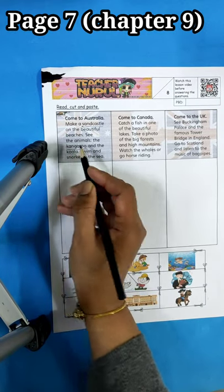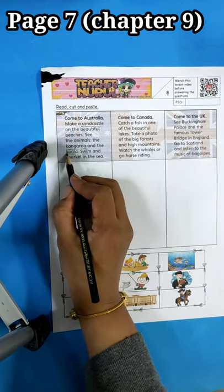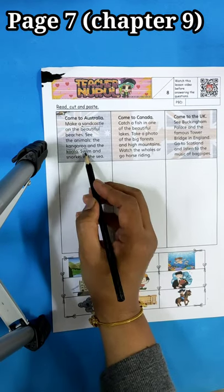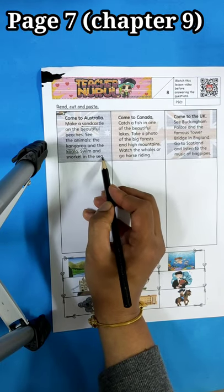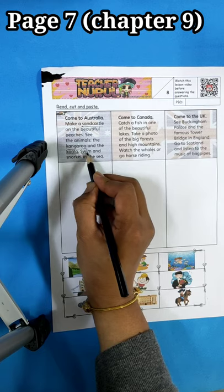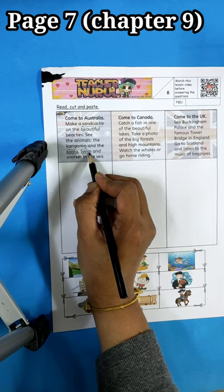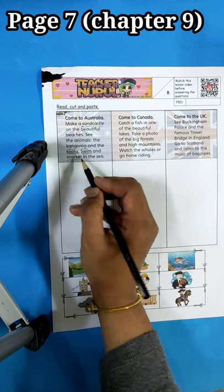Another keyword here. Swim and snorkel in the sea. So the keyword is we have swim and that one is snorkel.